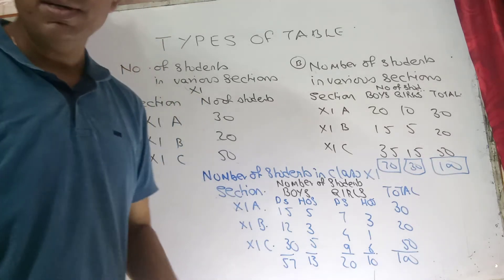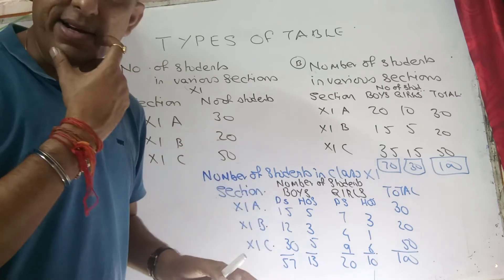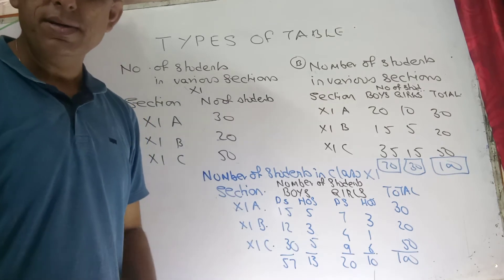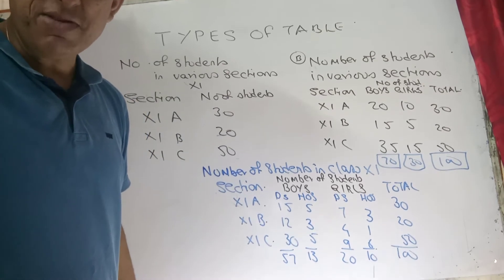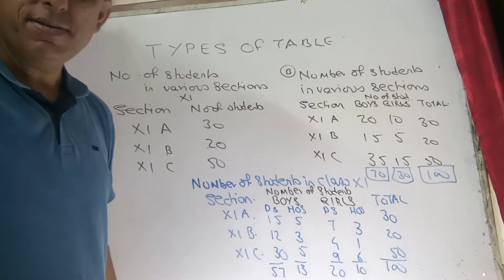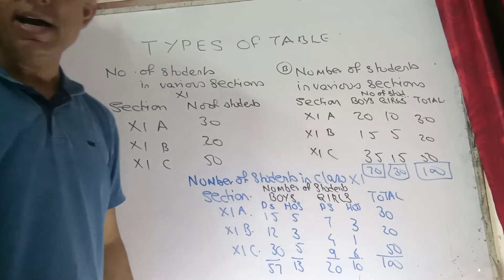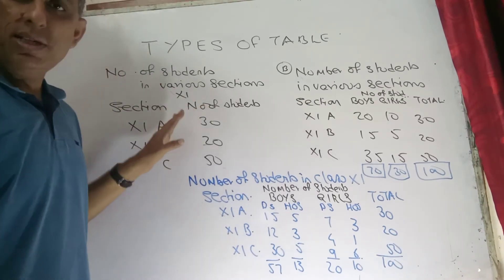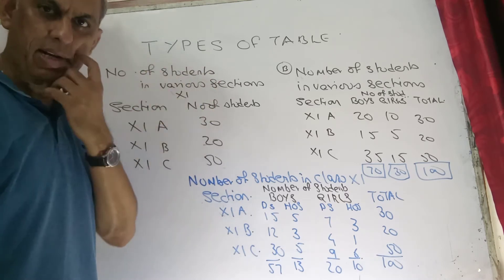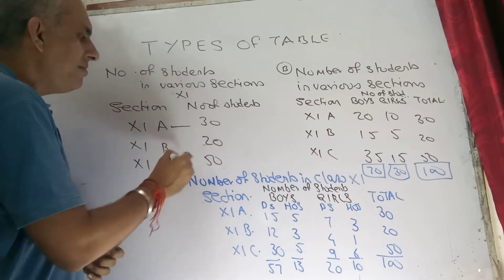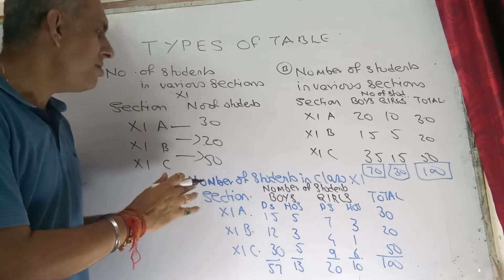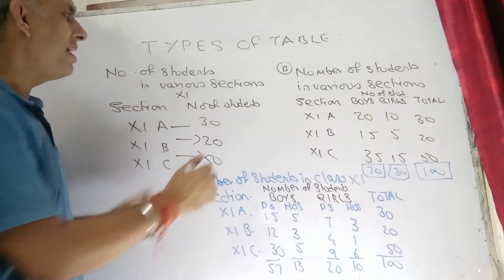Good afternoon students. Let's move ahead and try to see the different types of tables available to us. We'll focus specifically on two types of table: one being simple and the other being complex. Have a look at the types — see this table to the left. It shows the number of students in various sections, presenting limited information about the total strength.